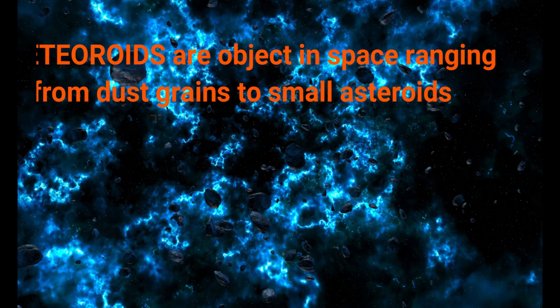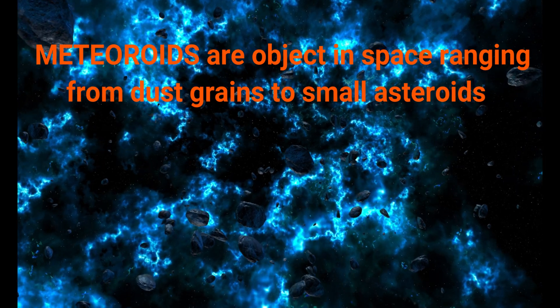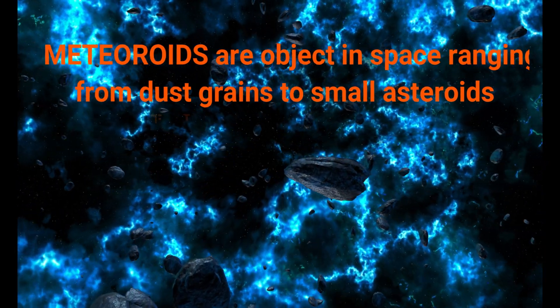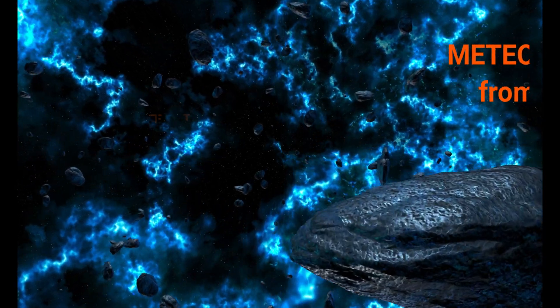Meteoroids are objects in space that range in size from dust grains to small asteroids. Think of them as space rocks. When meteoroids enter earth's atmosphere at high speed and burn up,